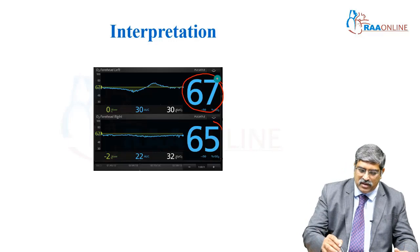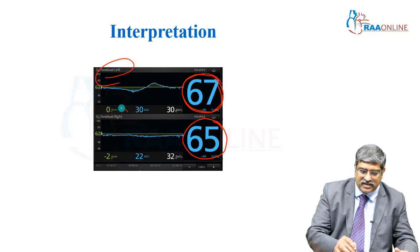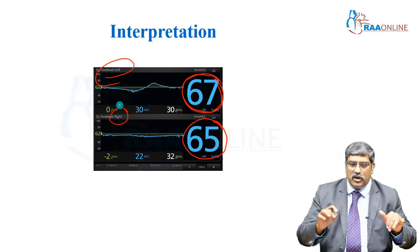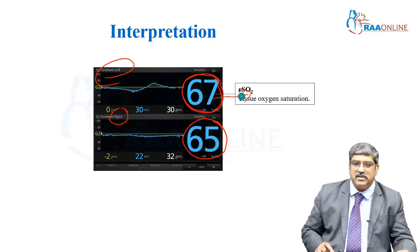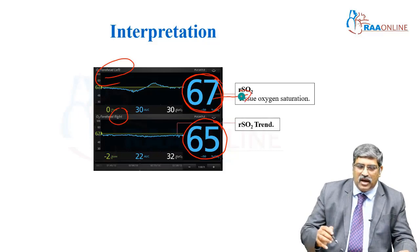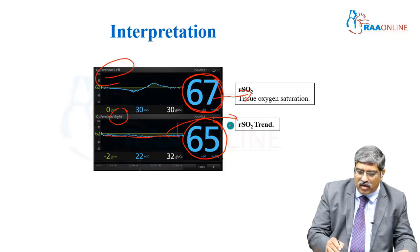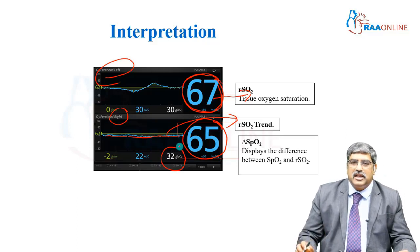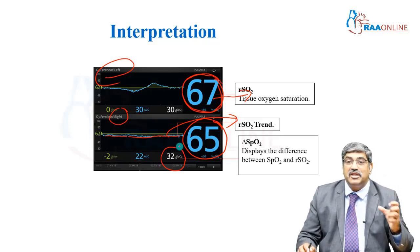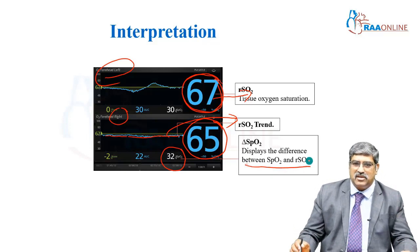Coming to the interpretation: here 67 is seen on the left side and 65 is on the right side. This is the absolute value which you see on the monitor — the value in cerebral oxygen saturation. And here you can see a line which is the trend of the oxygenation. You can also see delta SpO2, which is the difference between the pulse oximeter and the cerebral venous oxygen saturation.